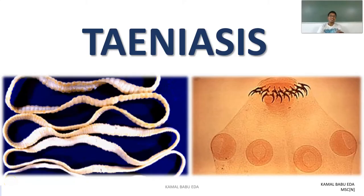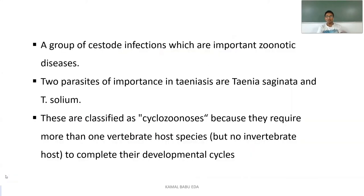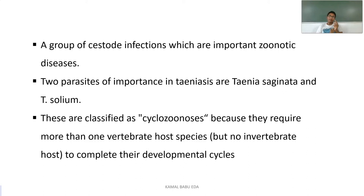Today we will discuss the disease condition teniasis from community health nursing, focusing on epidemiology and the life cycle of the disease. Teniasis refers to a group of cestoid infections which are important zoonotic diseases, caused by two parasites: Taenia saginata and Taenia solium. These are classified as cyclozoonosis because they require more than one vertebrate host to complete their life cycle.